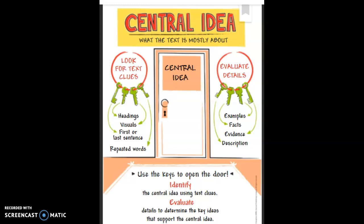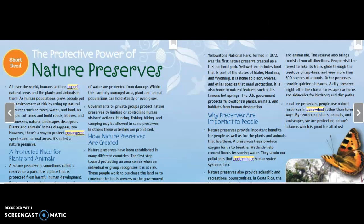We use the text clues and the supporting details to help us infer what the central idea is. Authors include those details and other evidence to help support the central idea. Now we are going to be looking for central ideas and supporting evidence as we read an informational text today called nature preserves. Our short read today is called "The Protective Power of Nature Preserves." Our purpose with this informational text genre is to learn facts about the topic of nature preserves.